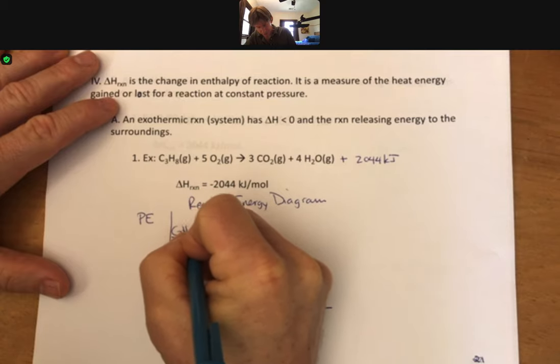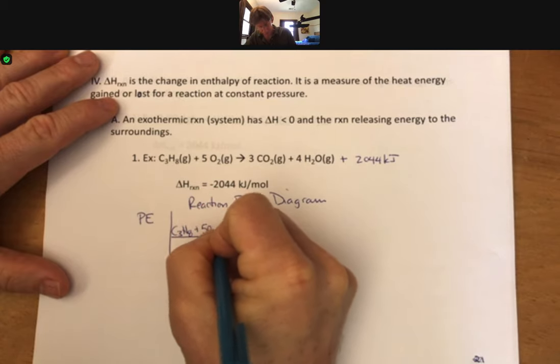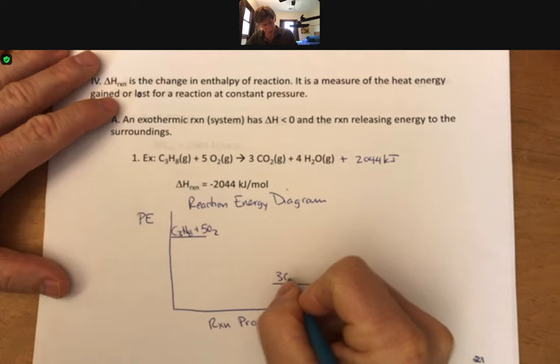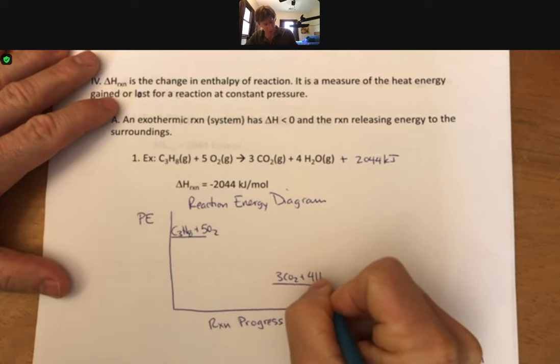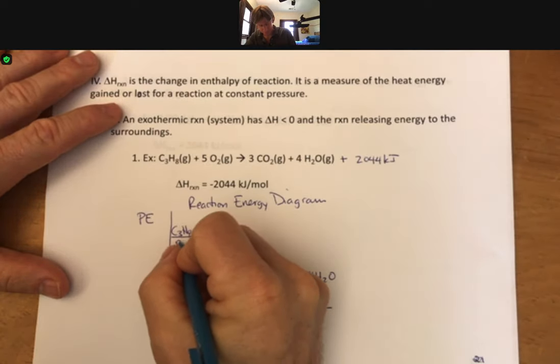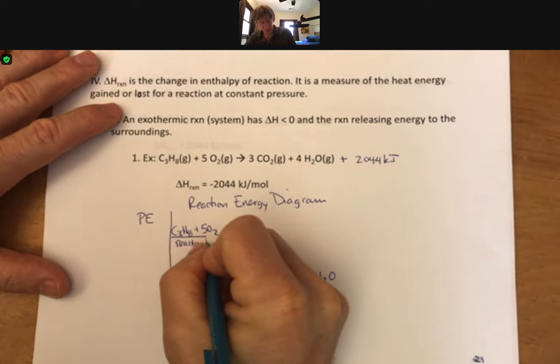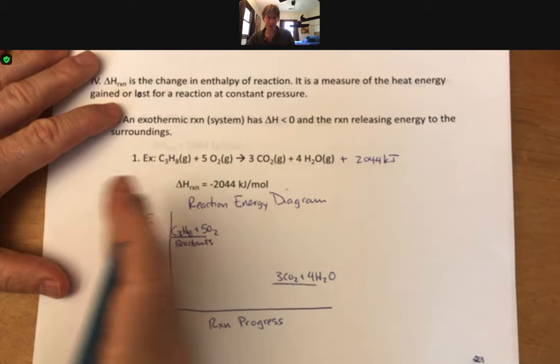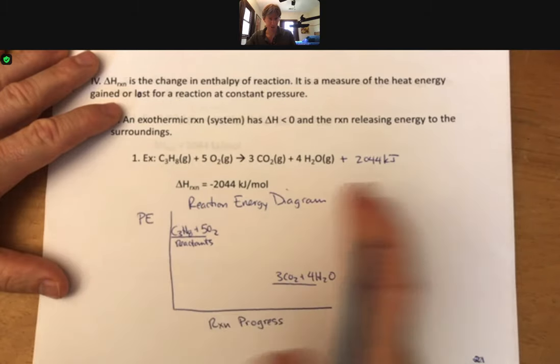So C3H8 plus 5O2 and 3CO2 plus 4H2O. So I have my reactants up here. And again, the reactants are always on the left and the products are always on the right.